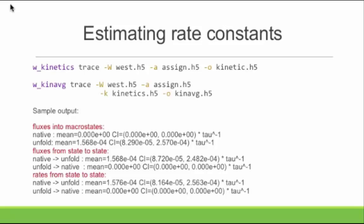Here are the one-dimensional results. The first section gives you the total flux into each state — it doesn't care where it's coming from, so it's not a conditional flux. The other sections give the fluxes and conditional rates from native into unfolded. Mind you, this is in inverse-tau units. If you want it in seconds, you have to convert from tau to seconds. And if you have a second-order process, you'd need a concentration correction. The rates are basically the flux normalized by the probability within the source state.